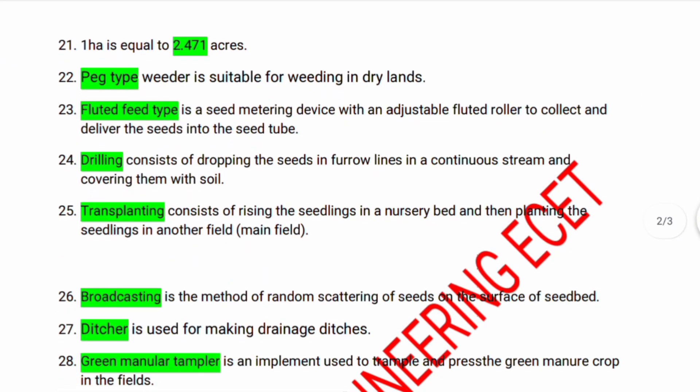One hectare is equal to 2.471 acres. Peck type weeder is suitable for weeding in dry lands. Peck type is a seed metering device with an adjustable fluted roller to collect and deliver seeds into the seed tube. Flutter feed type consists of dropping seeds in furrow lines in a continuous stream.